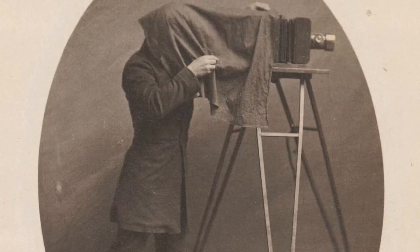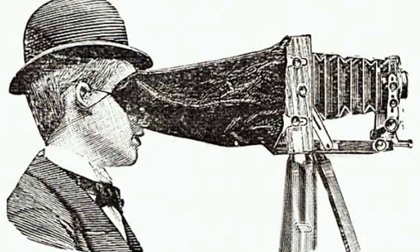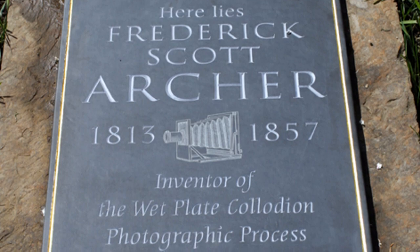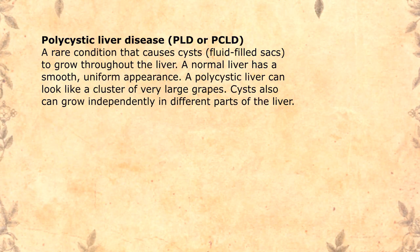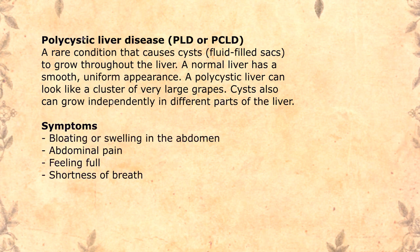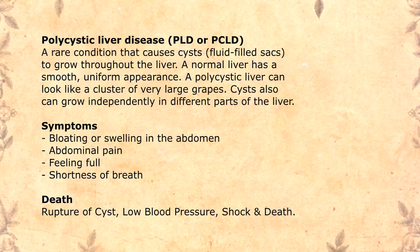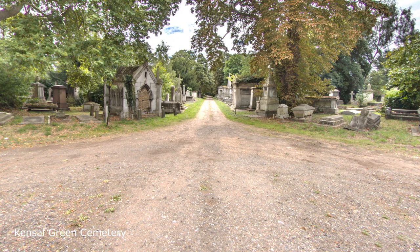He also made significant contributions to optics and camera designs and patented several of his inventions. However, Archer died before he could reap the benefits from his patents, and died in poverty on May 1, 1857 at the age of 44 of cystic liver disease, according to his death certificate. His obituary described him as a very inconspicuous man in poor health. After Archer's death, his family was awarded a crown pension of £50 per year, and the children were given £767 collected by the Photographic Society. Frederick Scott Archer is buried at Kensal Green Cemetery in London.